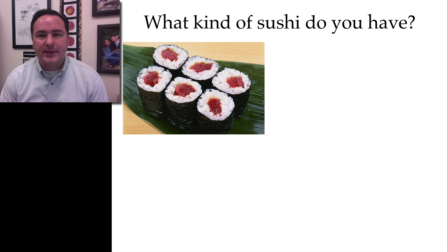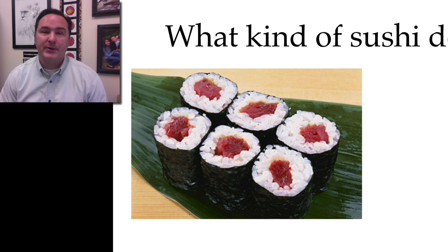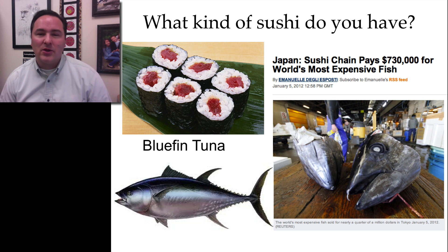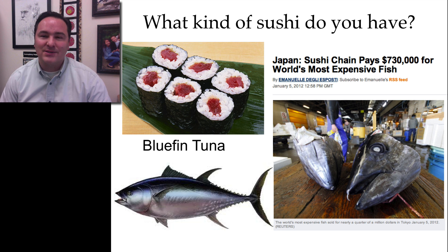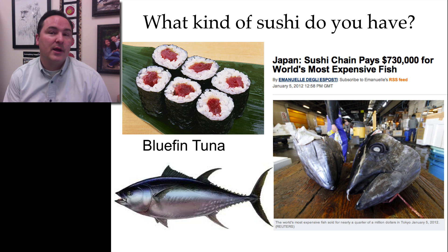I want you to imagine that you go to a restaurant and maybe you like to eat sushi. They serve you some sushi and it's really expensive — like $100 — and it's supposed to be bluefin tuna. But as you're eating it, you're not sure if that's really bluefin tuna. There was an article from 2012 where one fish sold for $730,000, one of the most expensive fish ever sold, because these fish are used in high-end sushi restaurants. It would be really important to know if you're eating bluefin tuna or instead tilapia or some other less expensive fish.